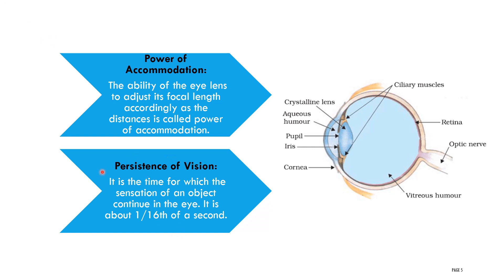Persistence of vision is the time for which the sensation of an object continues in the eye. It is about 1/16th of a second. For example, if you see an object, the image remains on the retina for only 1/16th of a second. After that short period, it is diminished.